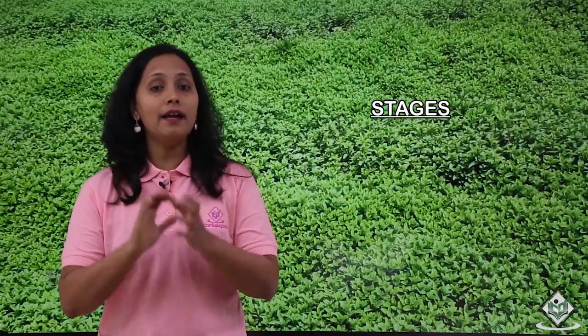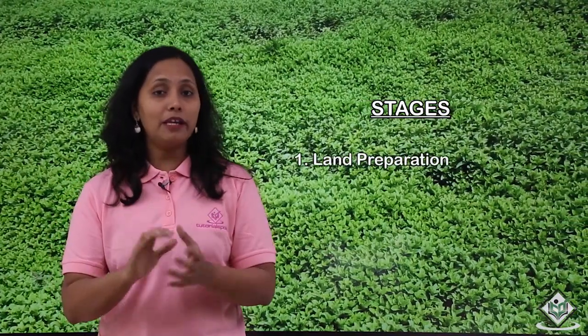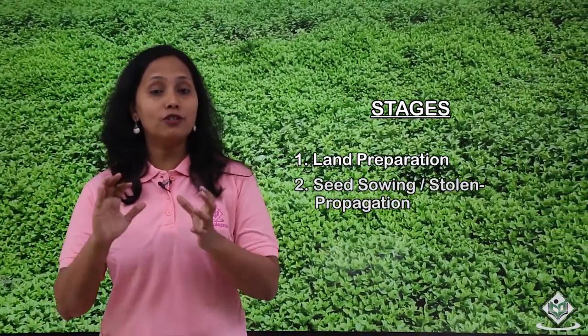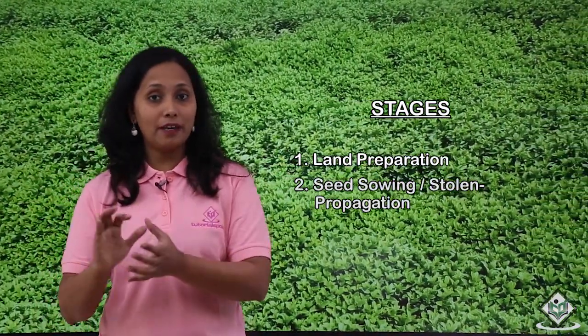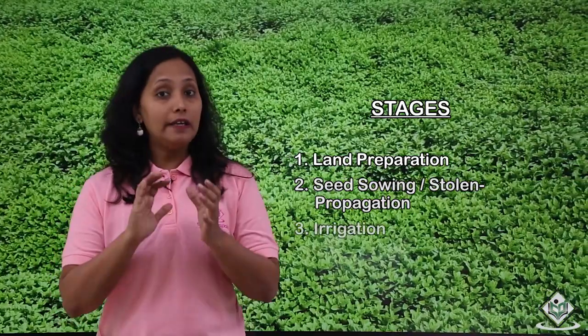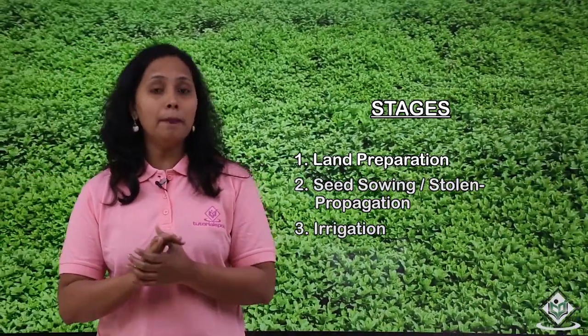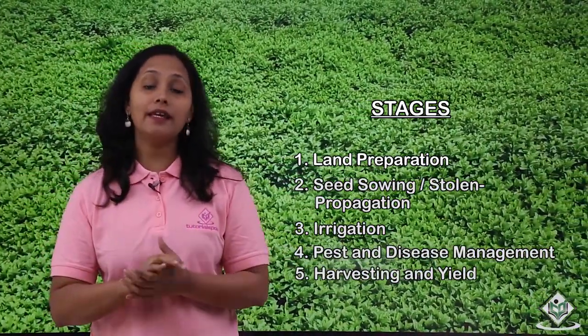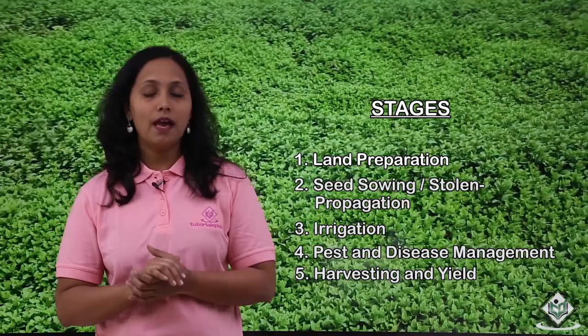Let us now see the stages involved in the cultivation process of mint crop. The stages are: land preparation, seed sowing and stolon propagation, irrigation, pest and disease management, and harvesting and yield.